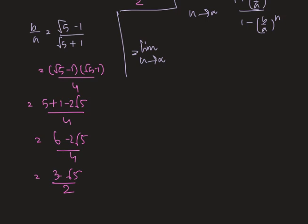Now, as we know that 3 minus root 5 divided by 2 is less than 1, that means it is a fraction. Hence, if we take the limit on it we get 0, that means 1 plus 0 divided by 1 minus 0.